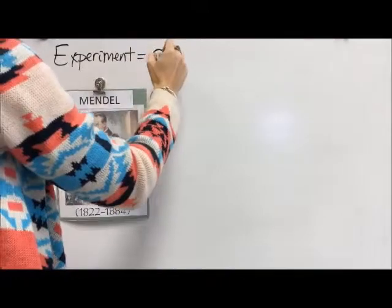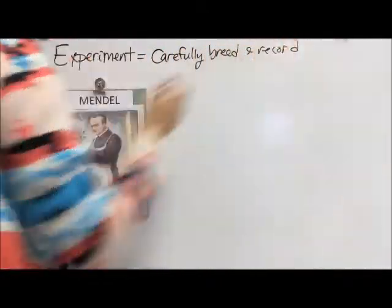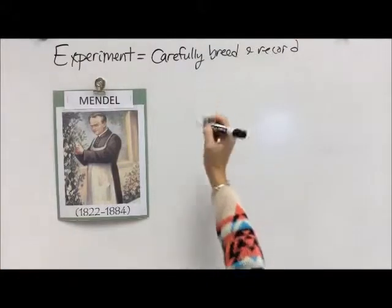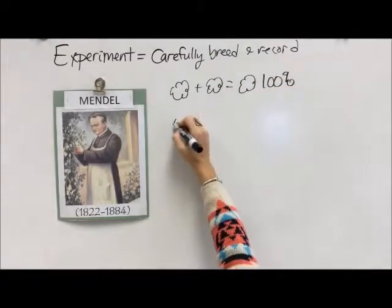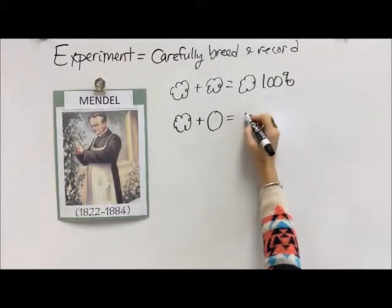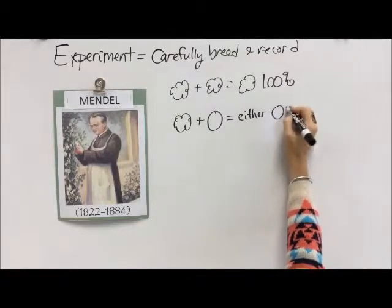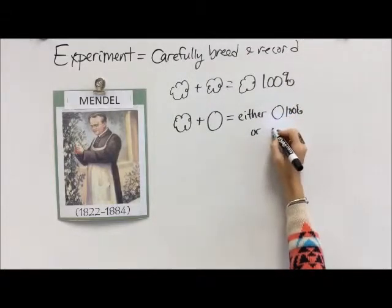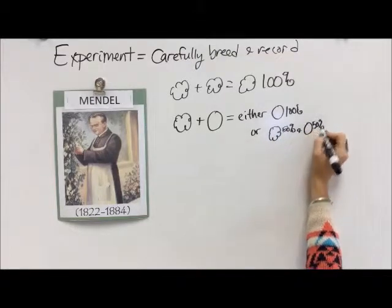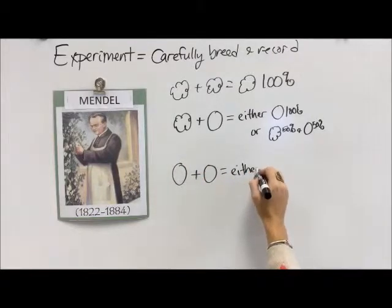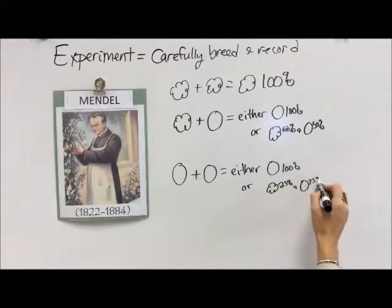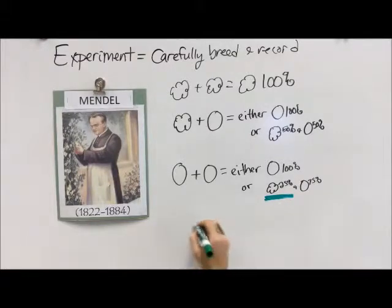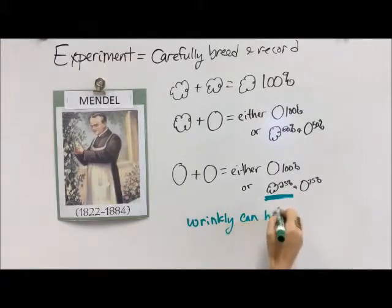He thought to himself: how curious that wrinkly always gives me wrinkly, but smooth can give me either one. So he decided to experiment. He was hanging out in a garden running a monastery — he had nothing but time. He carefully bred and recorded over years of work, creating a huge body of work. Wrinkly plus wrinkly equals wrinkly 100% of the time. Wrinkly plus smooth gave him either smooth 100% of the time, or 50% wrinkly and 50% smooth. Smooth plus smooth gave him either 100% smooth or 25% wrinkly and 75% smooth, every single time.